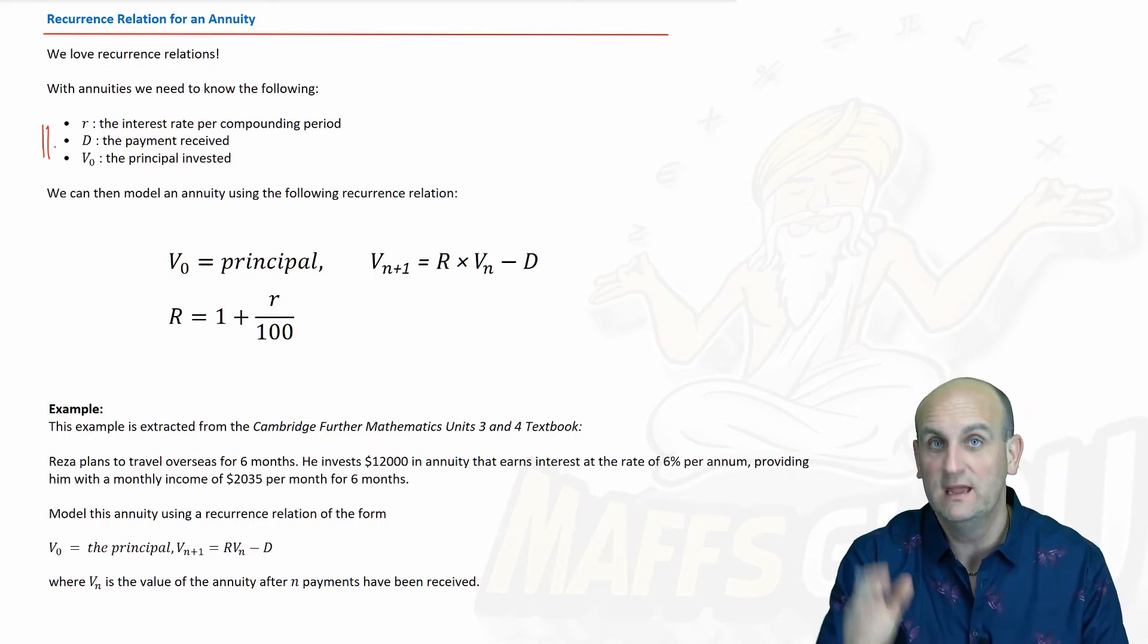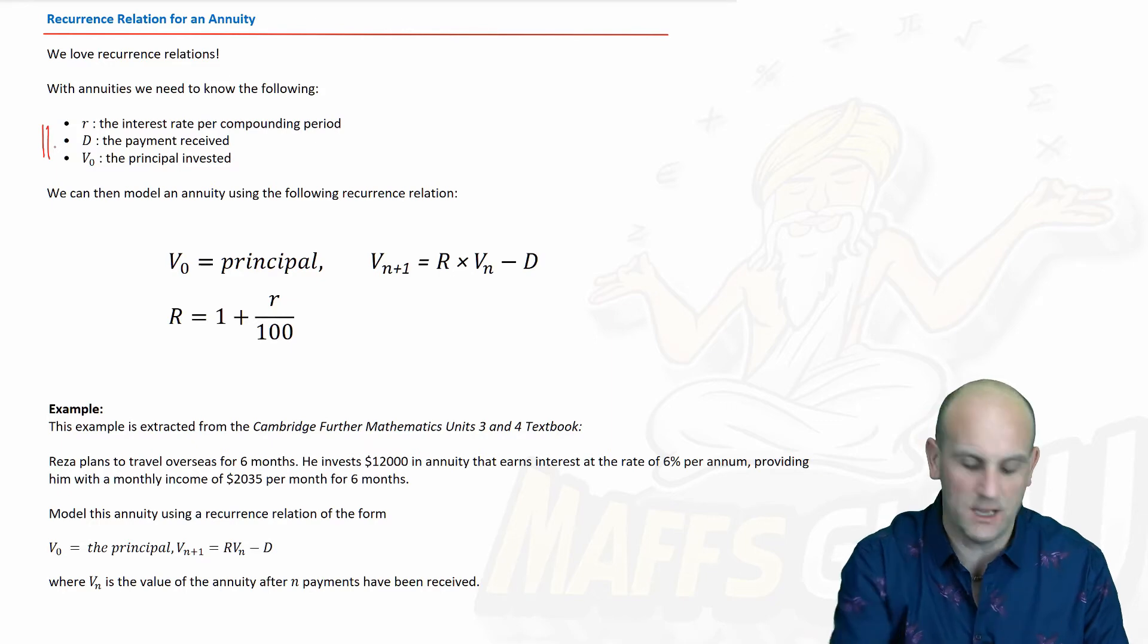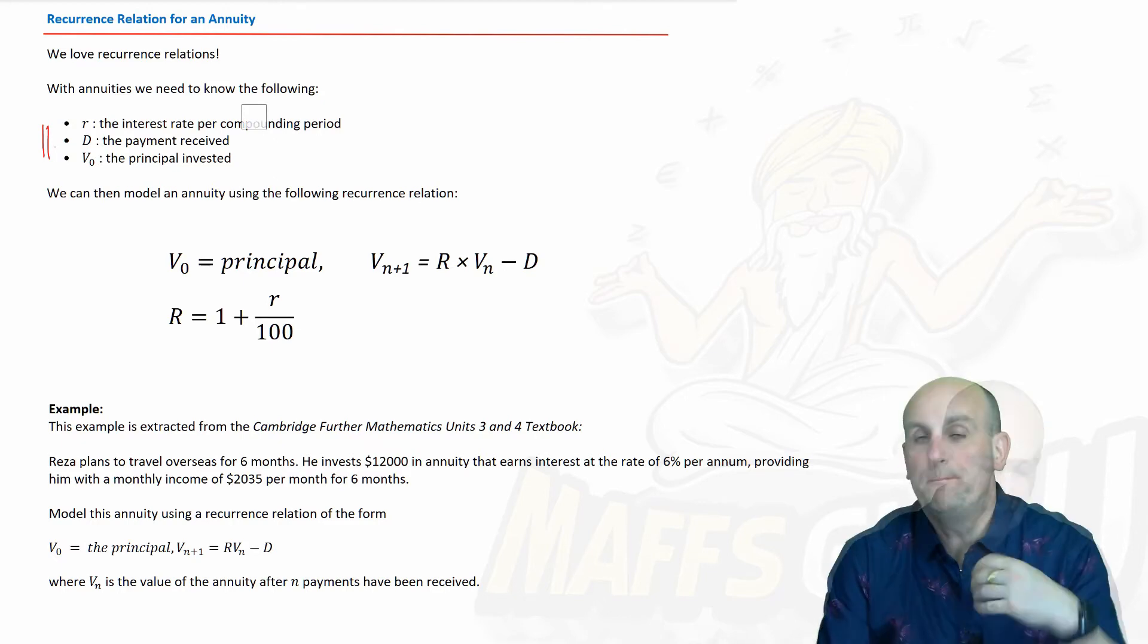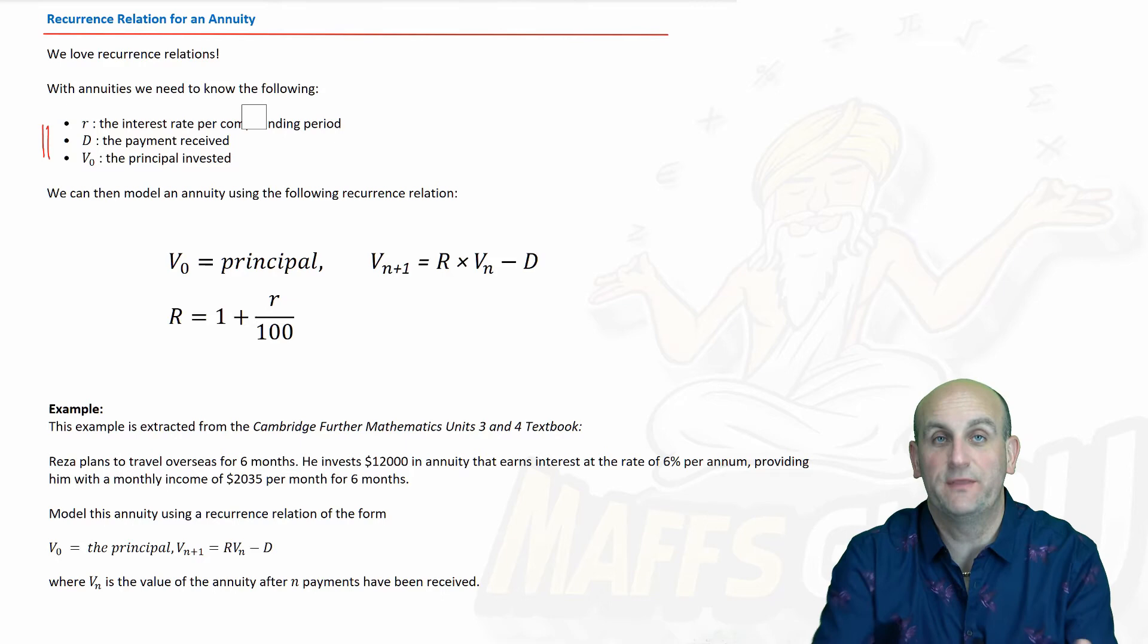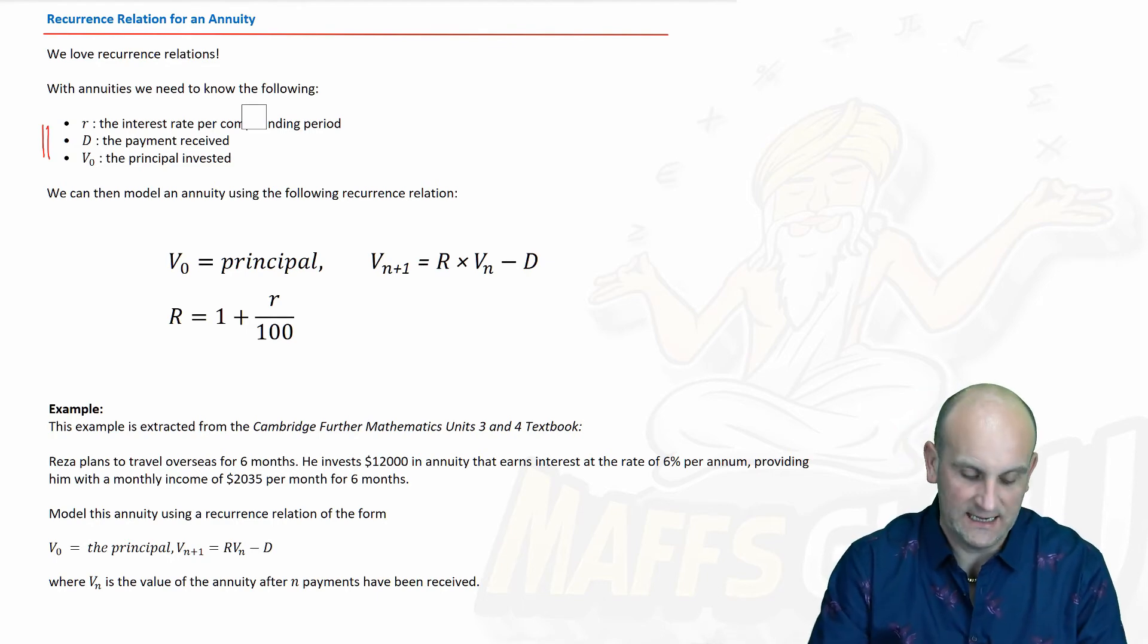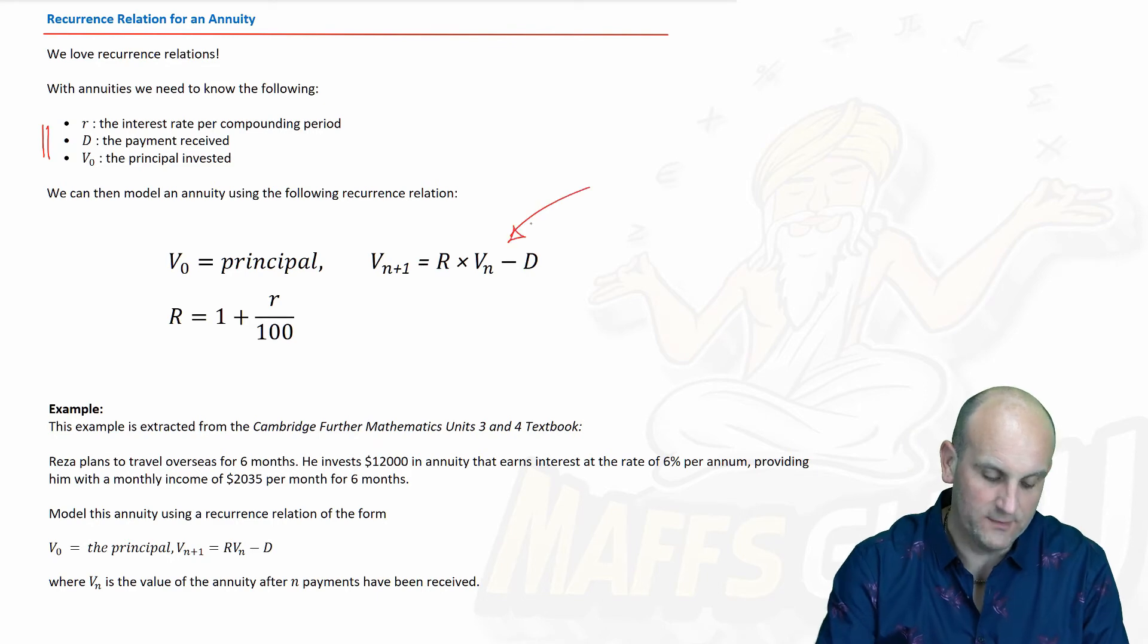So, with annuities, we need to know certain things for our recurrence relationship. Now, remember, a recurrence relationship is how do I go from term to term to term. First thing we need to know is the rate of interest per compounding period. So, if we put money into a bank, we want to know how much interest I'm going to get. The payment receipt. Now, obviously, each month they're going to give me some money. We want to know how much money we're going to get and the principal we invested, how much I put into the bank first before I started taking it out.